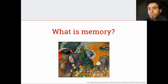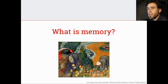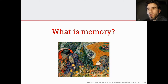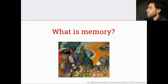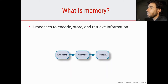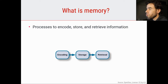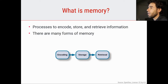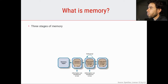So what is memory? Memory is many things. A lot of things that happen in our brain have in some way to do with memory, just like attention is many things. So it's a multifaceted concept. But in general, any process to encode, store, and retrieve information is memory. And there are many forms of memory.